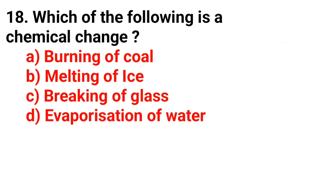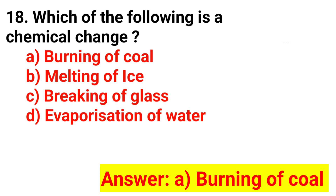Question 18. Which of the following is a chemical change? The answer is Option A: Burning of coal.